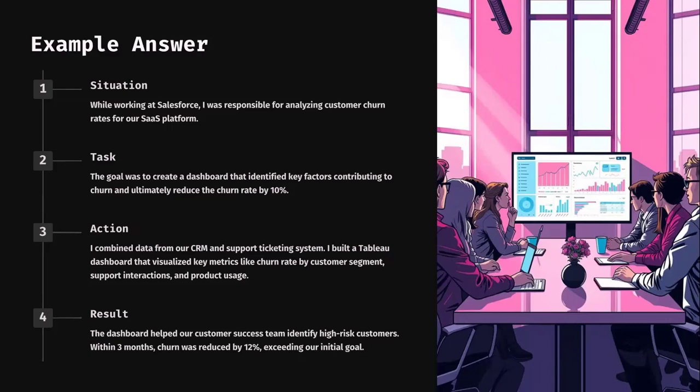The goal was to create a dashboard that identified key factors contributing to churn and ultimately reducing the churn rate by 10%. Here you are clearly stating the task and goal of the project. When you answer this way, it shows how clear you are about your thoughts. You may have done many projects, but if you don't know the problem statement or goal, you won't be able to explain it. It's always better to write it down when defining a project.